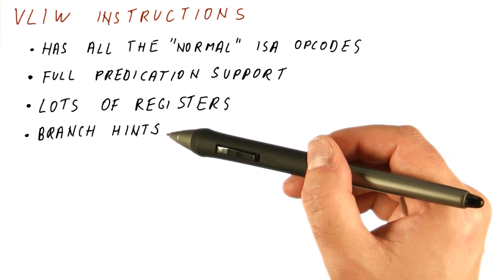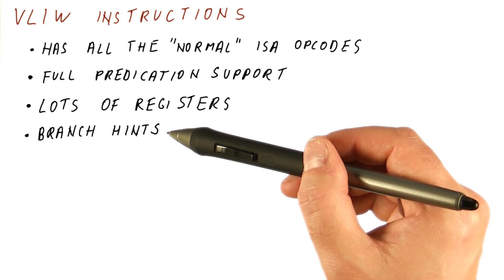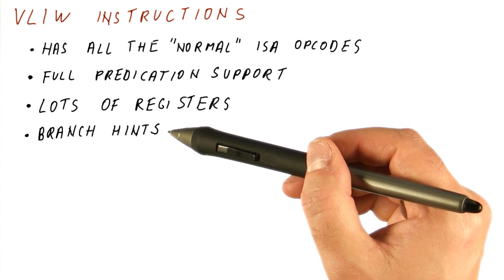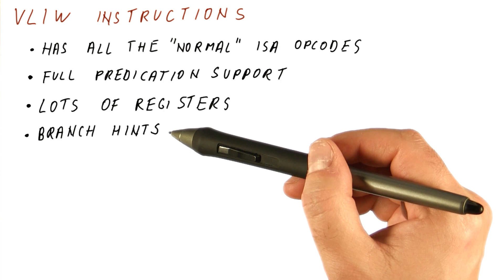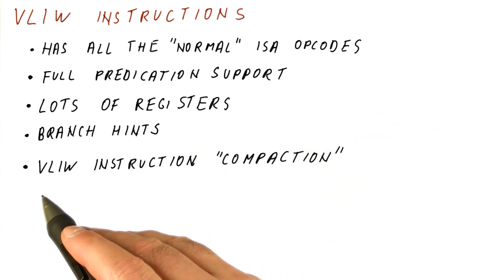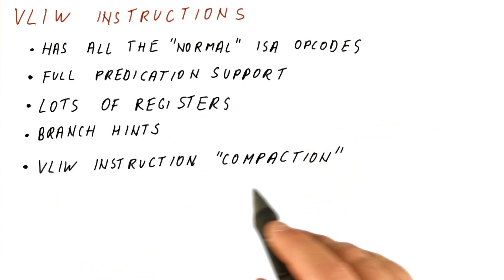Another frequently seen type of ISA support for compiler work are the branch hints, where the compiler can specify to the hardware what it thinks the branches will do. This helps the branch predictors, and we also often see some sort of compaction mechanism for VLIW instructions.